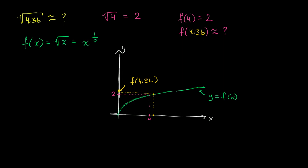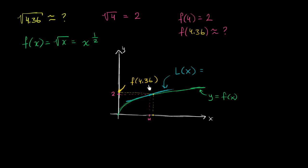So how can we do that using what we know about derivatives? What if we were to figure out an equation for the line that is tangent to the point at x equals 4, and then use that linearization to approximate values local to it? This technique is called local linearization. Let's figure out what the equation of this tangent line is — let's call that L(x) — and then we can evaluate that at 4.36. That should be a little bit easier to compute.